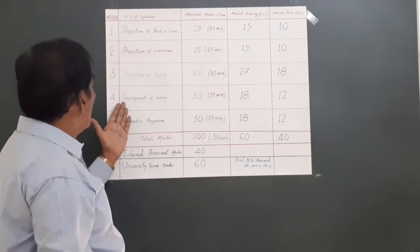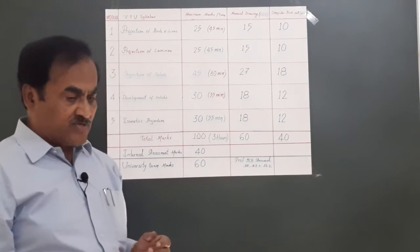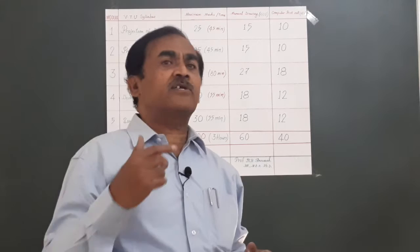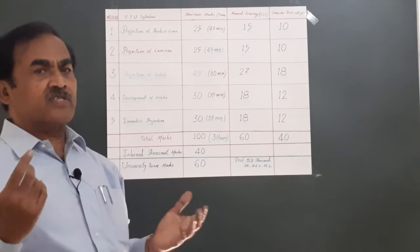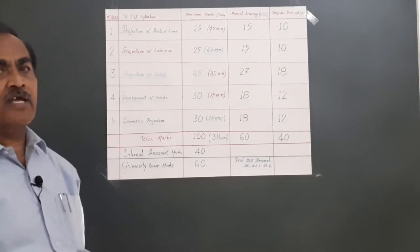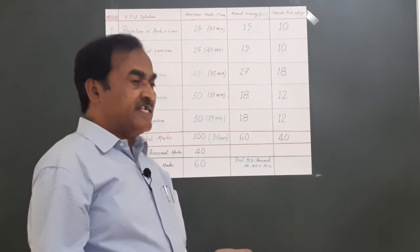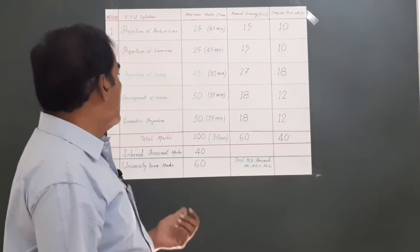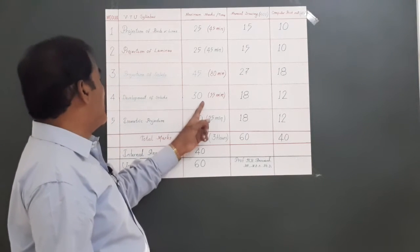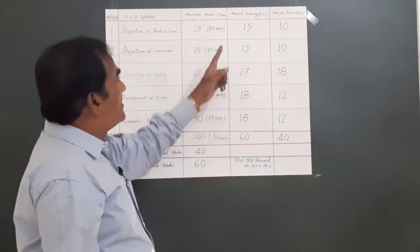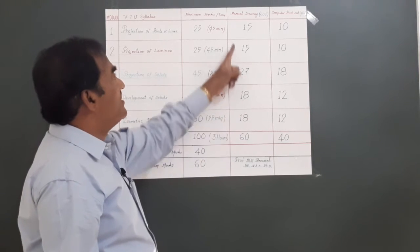Module number 4 covers development of solids - the development of lateral surfaces of all these solids like a frustum of a cone, a pyramid, frustum of a pyramid, cylinders, etc. Here you have 30 marks allocated: 18 marks for manual drawing and 12 marks for computer printout.